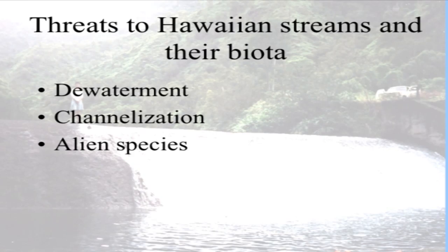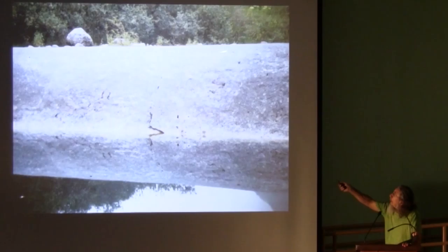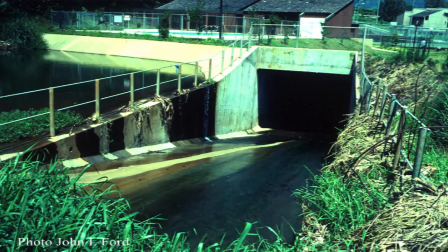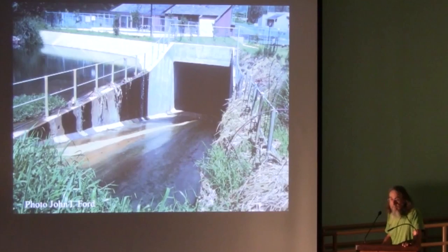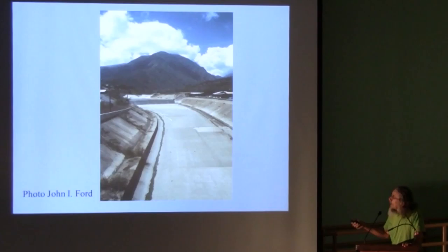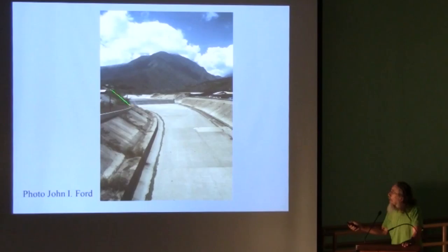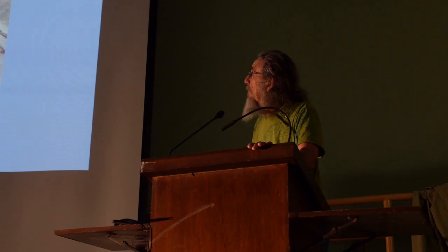Now I'm going to end by talking about threats to Hawaiian streams and their biota: dewatering, channelization, and alien species. This is a stream, and this is a dam — obviously nothing can get above that dam, and the water is being taken out of the pond behind the dam for a power station. This is a typical Oahu stream — Kaza stream — channelized, which is not good habitat for native stream creatures. On Maui, this is Iao stream — it's great for skateboarding, but this little trickle of water is Iao stream. There's plenty of water flowing up in Iao Valley park, but it's taken out of the stream for irrigation and other uses, and the Army Corps of Engineers built this huge concrete channel for flood control.